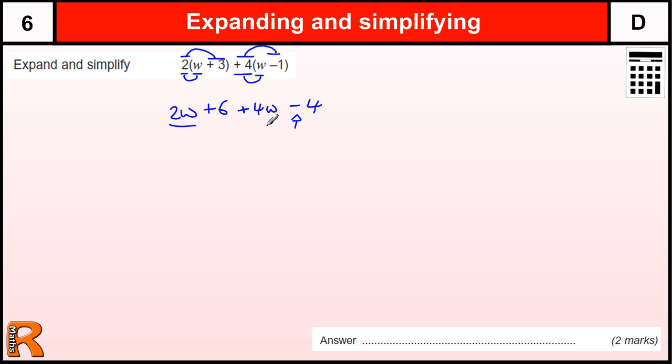Then we've just got to combine the w's, so we've got 2w and 4w, and that gives us 6w because we're adding them, and then we've got plus 6, take away 4, is plus 2.